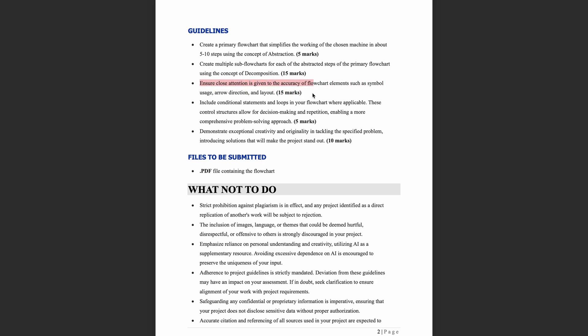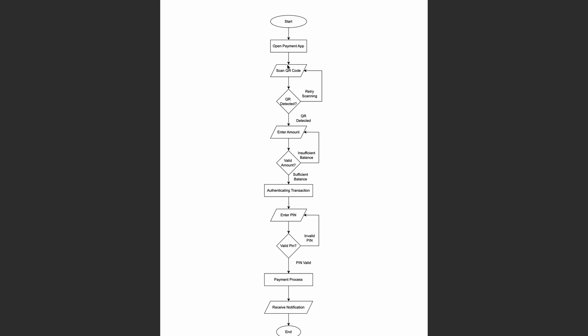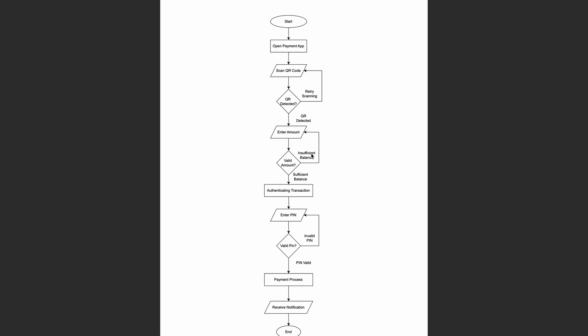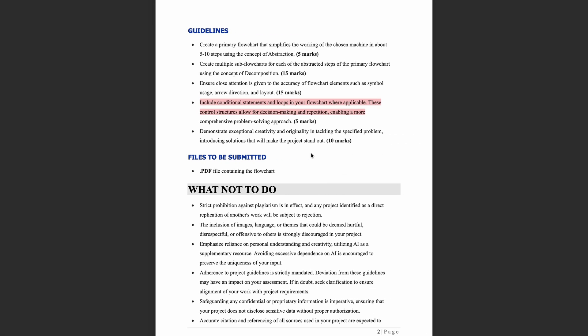Guideline three: Ensure close attention is given to the accuracy of flowchart elements such as symbol usage, arrow direction, and layout. This section carries 15 marks. Additionally, include conditional statements and loops in your flowchart where applicable. These control structures allow for decision-making and repetition, enabling a more comprehensive problem-solving approach. Use this concept to earn the 5 marks allocated for this section.